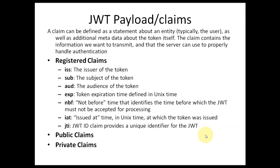There are three types of claims: registered claims, public claims, and private claims. Registered claims are those defined at the time of the JWT specification. Public claims are used broadly among most enterprises — everyone needs to register their own claims in the JWT registry to avoid conflicts. Private claims are claims that are private to a specific enterprise.